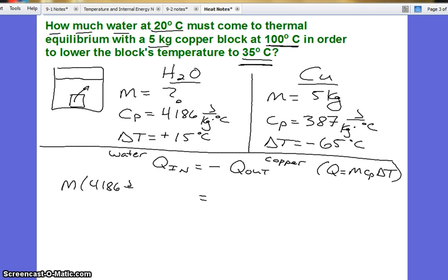Our formula is Q equals MC delta T for a temperature change. And so we have mass times specific heat capacity times temperature change for the water is equal to minus the mass times specific heat capacity times temperature change for the copper.